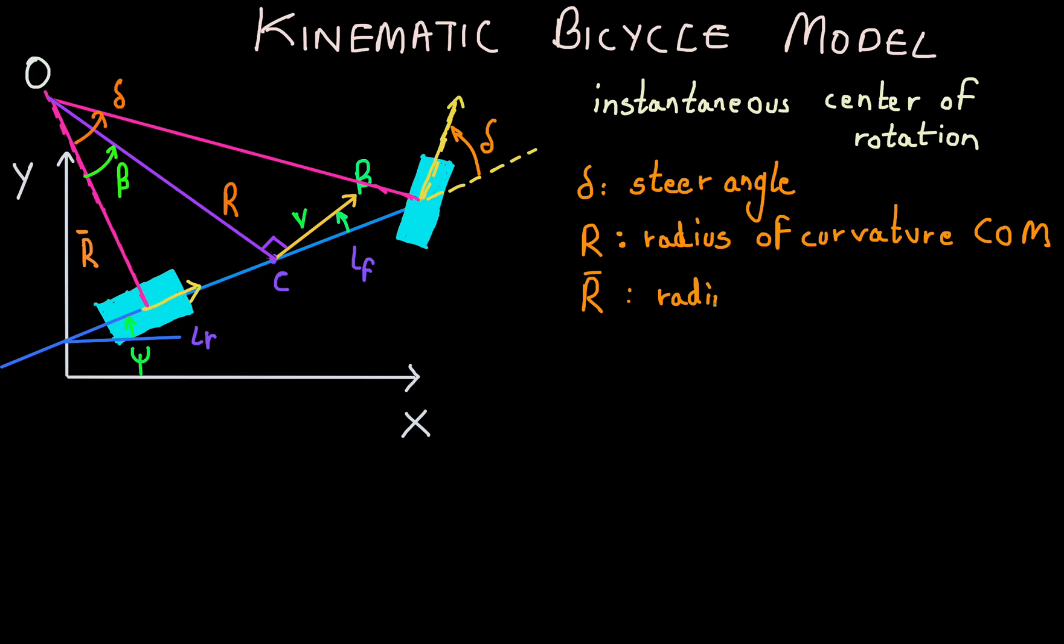Capital R with a dash on top is the radius of curvature of the rear axle. It's the distance of the instantaneous center of rotation from the rear axle. V is the magnitude of velocity at the center of mass. This is what we would expect to receive from the longitudinal control team. Beta is what we call the body slip angle. It's the angle made by our velocity vector with the longitudinal axis of the bicycle model.